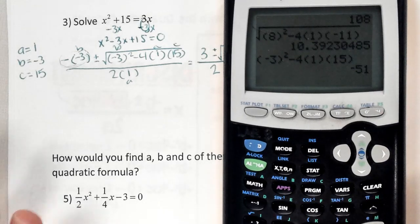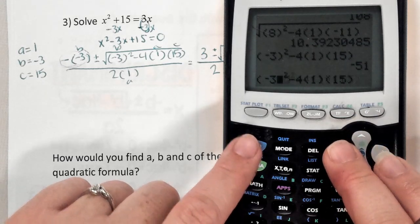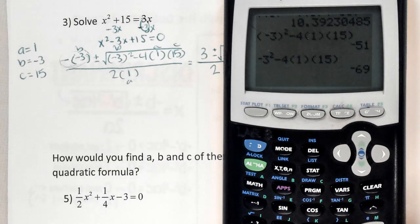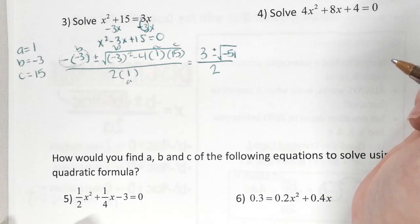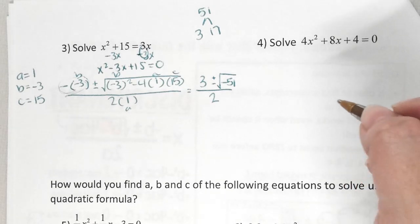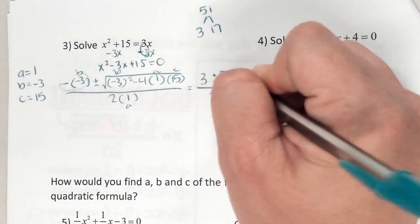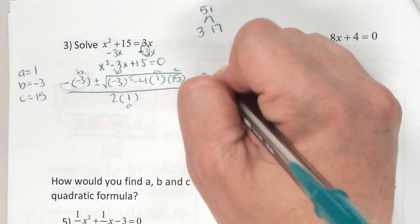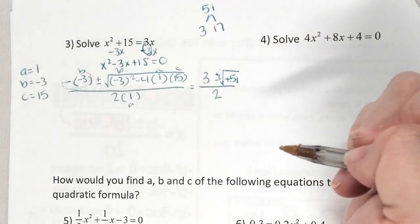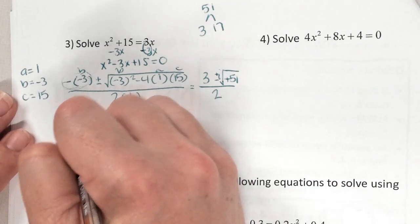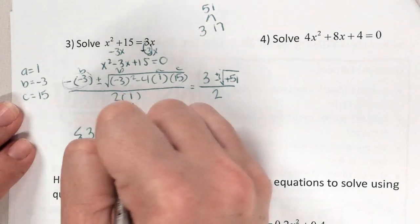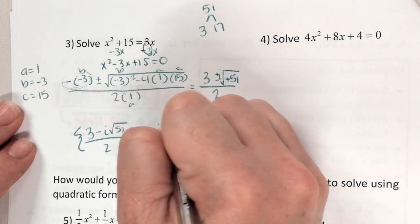Then the discriminant: negative 3 squared minus 4 times 1 times 15. I get negative 51. Important: if you forget parentheses around a negative b, you won't get the same answer — always use parentheses when plugging in. So the discriminant is negative 51. 51 is not prime — 3 goes into it 17 times, but 17 and 3 are prime, so I can't simplify the radical. Instead I put in the i and make it positive. So the answer is 3 minus i√51 over 2 and 3 plus i√51 over 2.